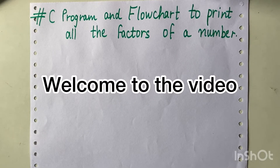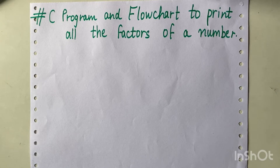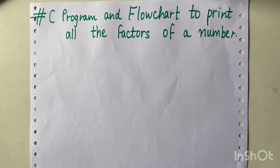Hi everybody, welcome to another video. In this video we are going to write a C program and draw a flowchart to print all the factors of a number. So what are the factors of a number? When a number is divisible by another number completely — that means when there is no remainder left — then the number that is dividing the other number completely is the factor of that number.